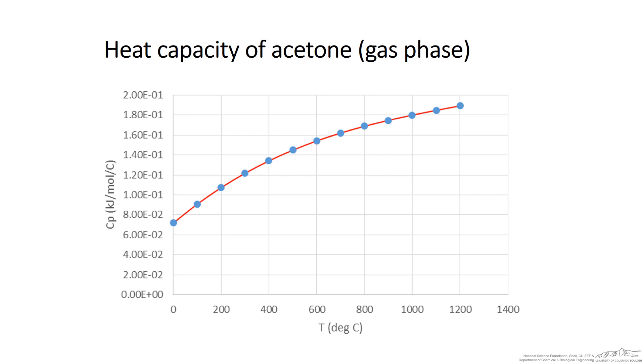Again, in a follow-up screencast, I'll show you how we can change this. Maybe the user wants to use temperature in Fahrenheit to predict heat capacity in BTU per pound-mole per degree Fahrenheit.